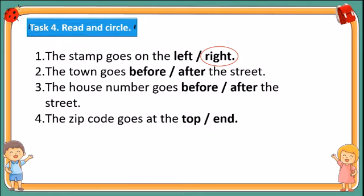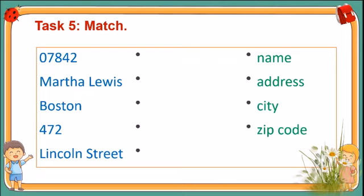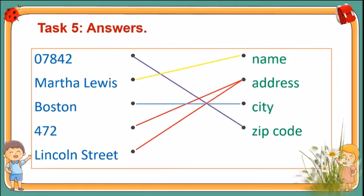Now let's check the answers. Well done, students. Now Task 5 — match. Match the left half with the right half. Answers: Apt 7842 — zip code; name — load its name; Boston — city; 472 — address; Lincoln Street — address.